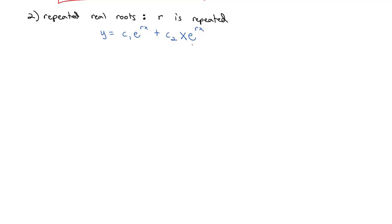If the root was repeated three times, we would multiply by x squared. We keep going, multiplying by x^(n−1)·e^(rx), and each individual term is actually linearly independent. You can run these through the Wronskian if you want to test whether they're actually linearly independent. Let's take a look at an example.